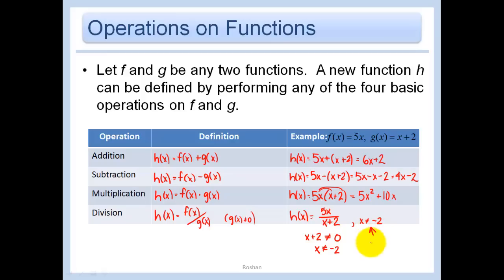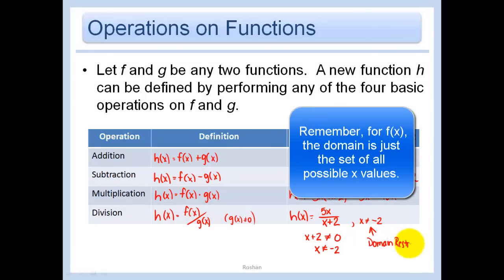This is called a domain restriction. The domain is what our x values can be. Since x cannot be equal to negative 2, that's a domain restriction.